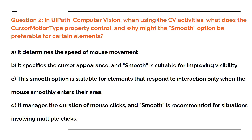In UiPath computer vision, when using the CV activities, what does the cursor motion type property control? And why might the smooth option be preferable for certain elements? Option A: it determines the speed of mouse movement. Option B: it specifies the cursor appearance and smooth is suitable for improving visibility. Option C: the smooth option is suitable for elements that respond to interaction only when the mouse smoothly enters this area. Option D: it manages the duration of mouse clicks and smooth is recommended for situations involving multiple clicks. Now pause the video and select your right answer.